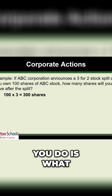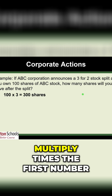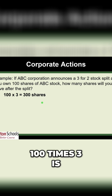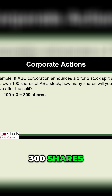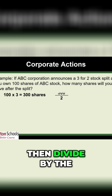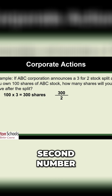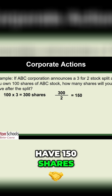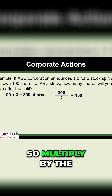The first thing you do is multiply by the first number. Three for two — so 100 times three is 300 shares. Then divide by the second number, which is two, meaning you're going to now have 150 shares. So multiply by the first number, then divide by the second number.